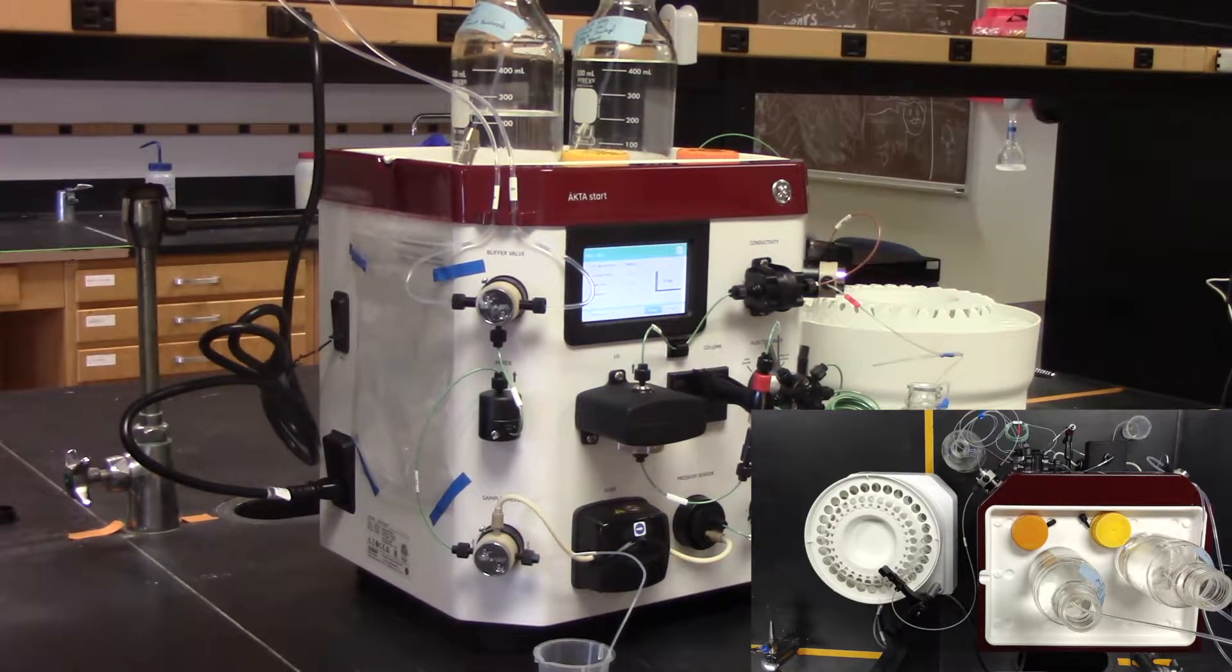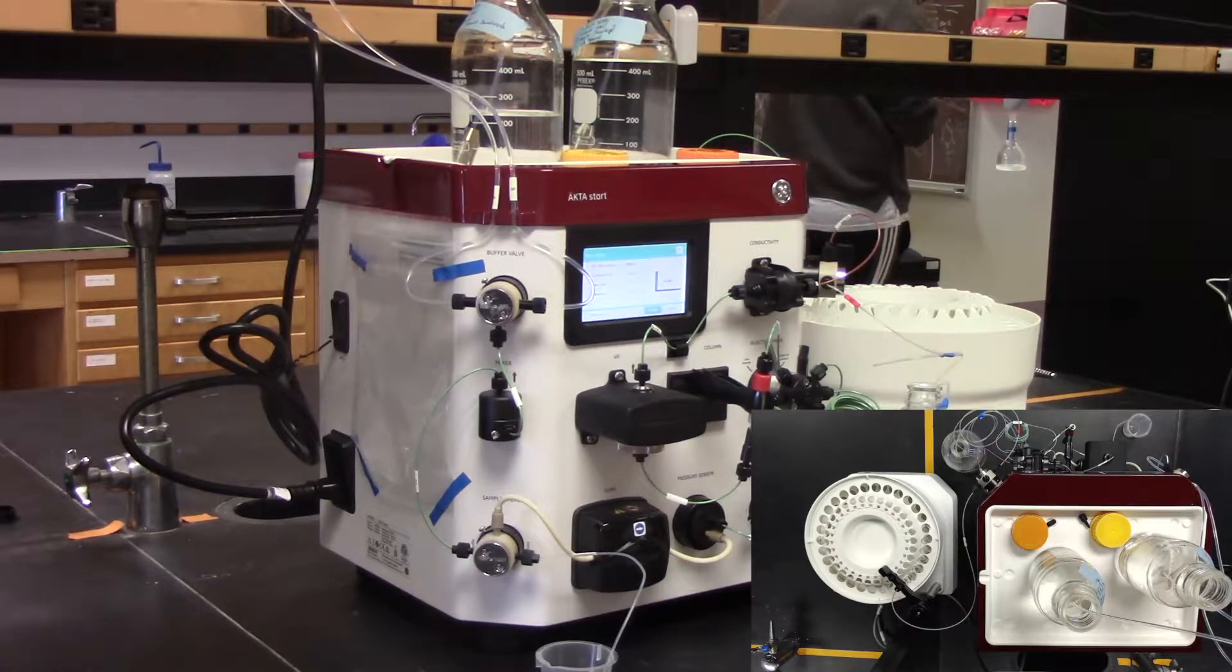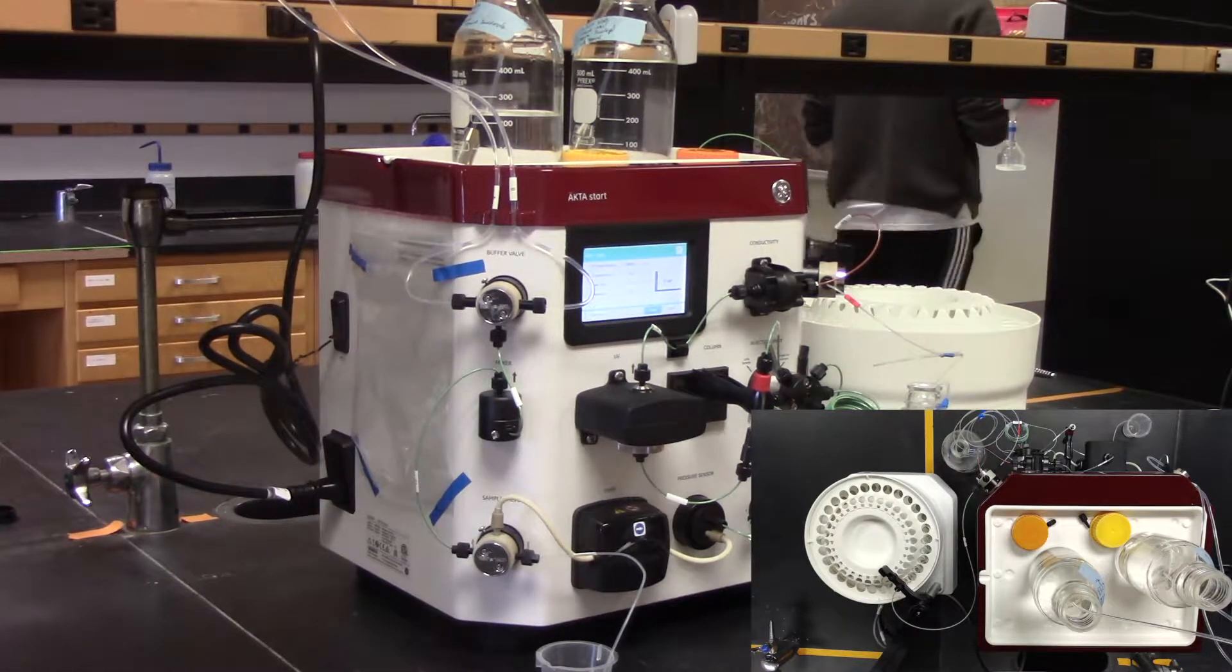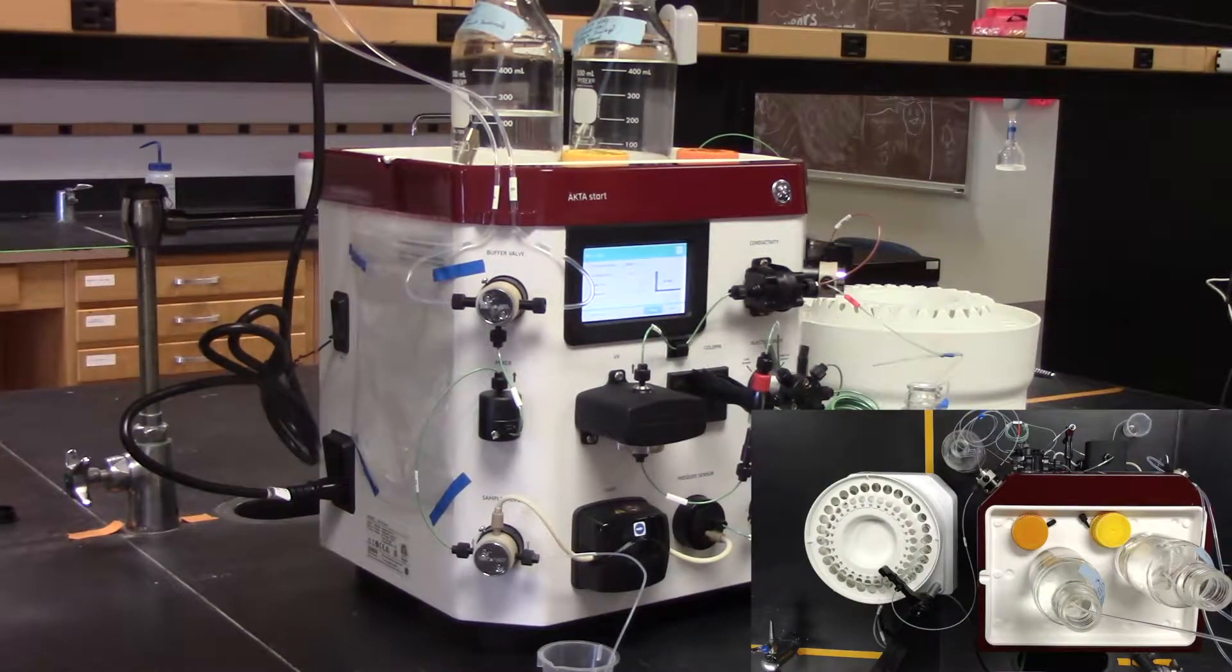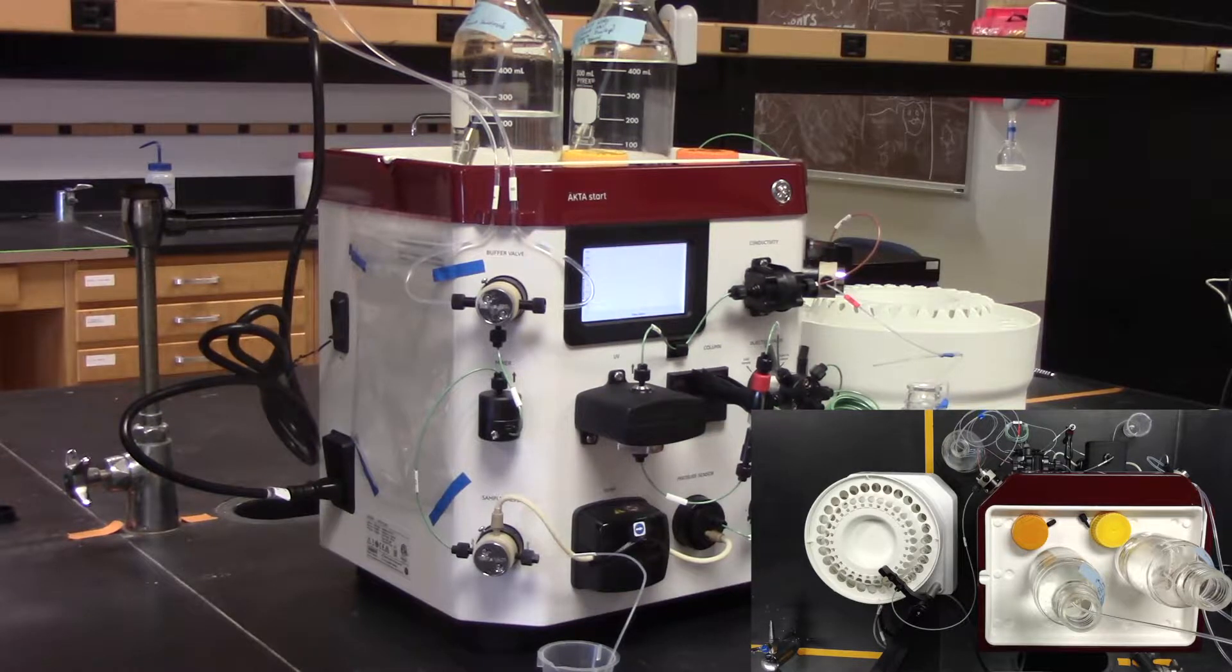Be sure not to load air onto the column. You will have to keep your eye on the amount of lysate that's left. After you have loaded all of your lysate, switch the sample valve so that buffer A or your lysis buffer is flowing over the column. Wash the column for 5 column volumes.